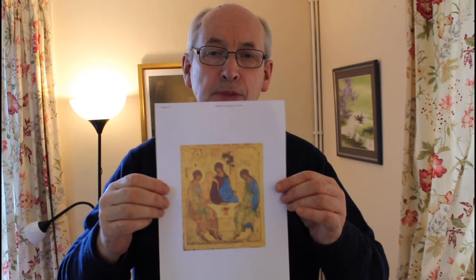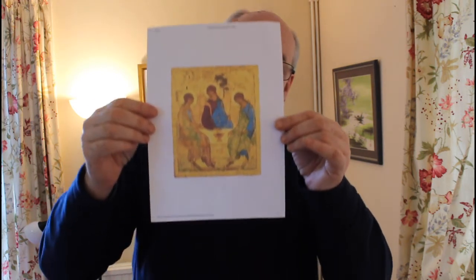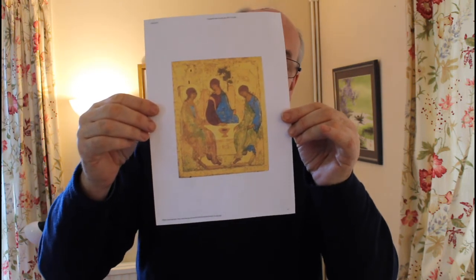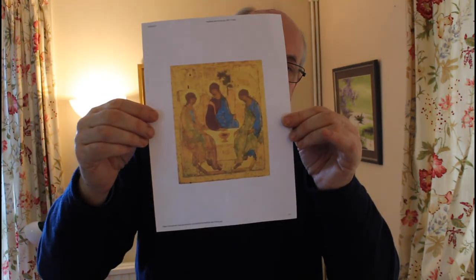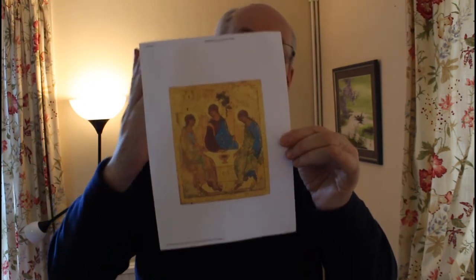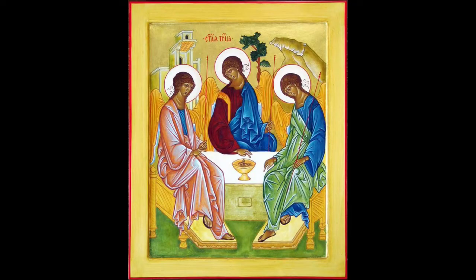Trisha's going to put this picture up on the video, but I'll just hold it. This is an icon of the Trinity — it's called Rublev's Icon of the Trinity. One of the figures represents the Father, one represents the Son, and one represents the Holy Spirit. And one of them is indicating with their hand that there's room for you and me to come in. All these examples are helpful.